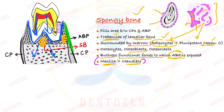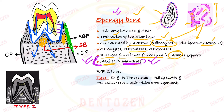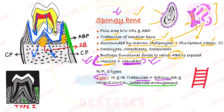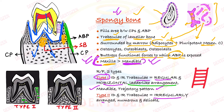Spongy bone fills the spaces between alveolar bone proper and cortical plates. It is made up of trabeculae of lamellar bone surrounding marrow spaces. These marrow spaces contain pluripotent mesenchymal cells and adipocytes. The trabeculae contain osteocytes inside, and on their surface we can see osteoblasts and osteoclasts. Spongy bone buttresses the functional and occlusal forces placed over alveolar bone proper. Spongy bone is more prominent in maxilla compared to mandible — opposite to the cortical plates which are thicker in the mandible.